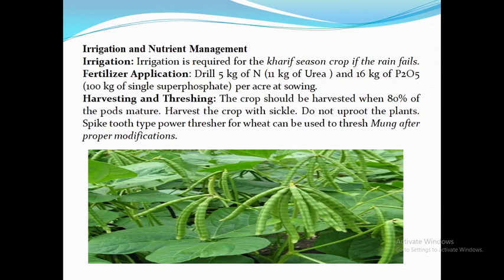Irrigation and Nutrient Management: Apply the first irrigation three to four weeks after sowing. Further irrigation may be given only if rain fails. Fertilizer Application: Drill 5 kg nitrogen in the form of 11 kg urea and 60 kg P₂O₅ in the form of 100 kg single superphosphate (SSP) per acre at the time of sowing.